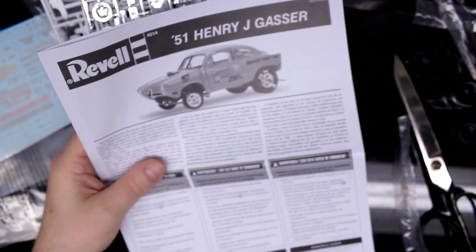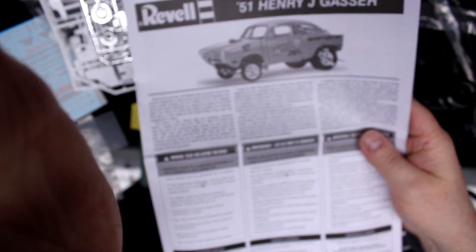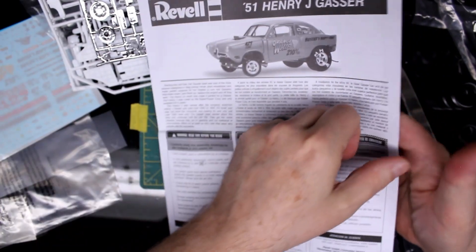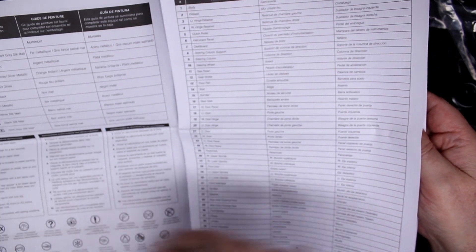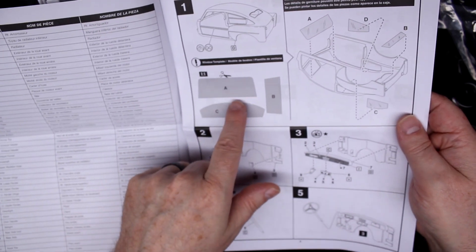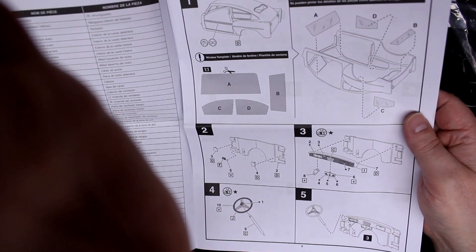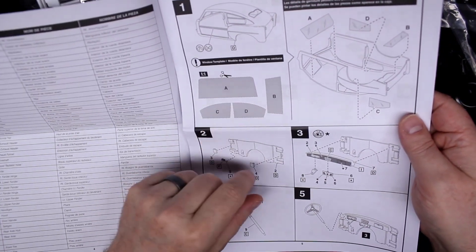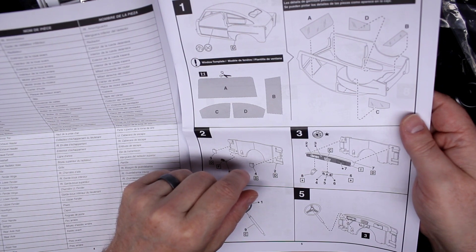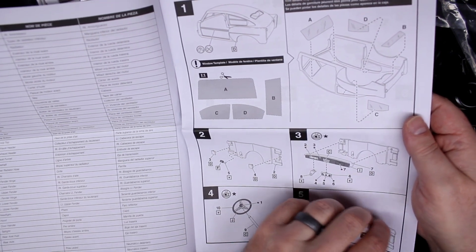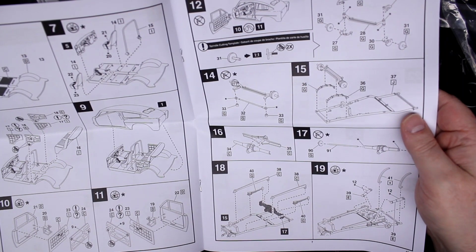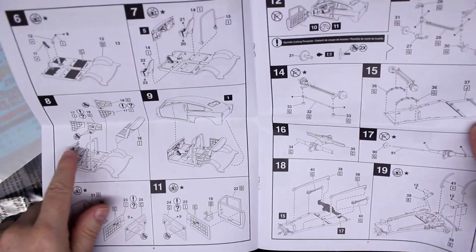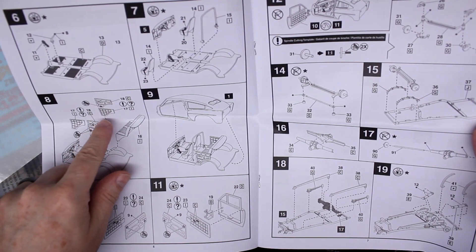And the instructions are a little bit fat. Gives you a name of all the parts. So you learn what your car parts are. There's a template for the window glass. Okay, here's a tidbit about the interior panels. They are reversible.